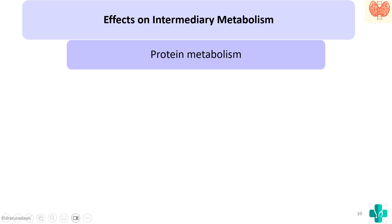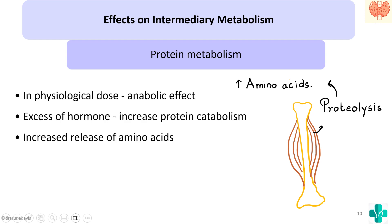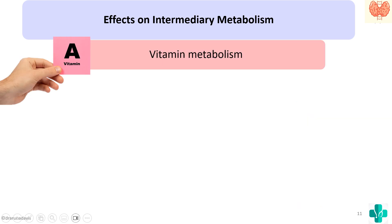In protein metabolism, thyroid hormone at lower levels has an anabolic effect, but at higher levels it can cause increased proteolysis, thereby releasing amino acids. That is why in hyperthyroidism the person can have muscle wasting because of increased proteolysis. In vitamin metabolism, the major vitamin involved with thyroid hormone is vitamin A.